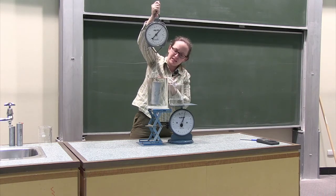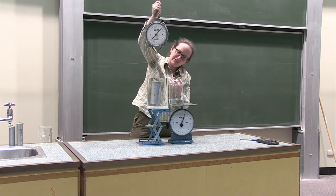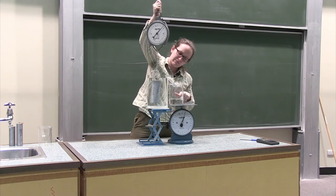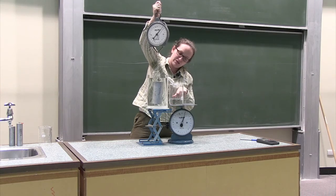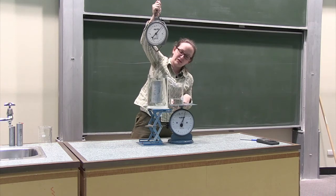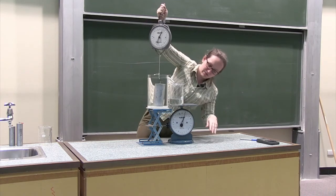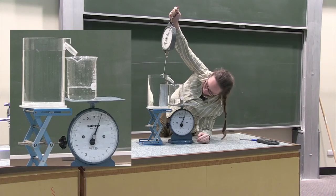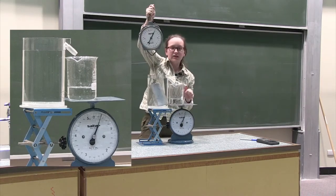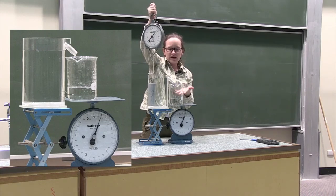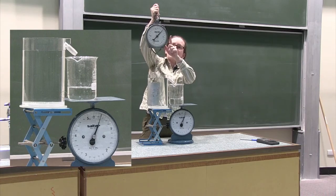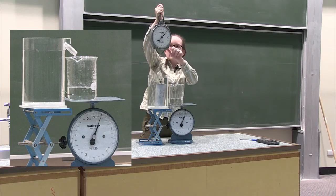The water which has been displaced by this metal is gradually draining out into the beaker. So as soon as that's finished, we can read off the mass of the water in the beaker, which will be proportional to its volume. The scales here are reading 300 — so 300 grams, 300 millilitres of water — which matches the difference in force recorded on the Newton spring balance.